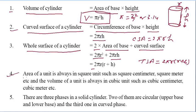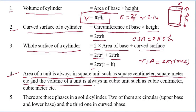Area of a unit is always in square units such as square centimeter, square meter, etc. The volume of a unit is always in cubic units such as cubic centimeter, cubic meter, etc.